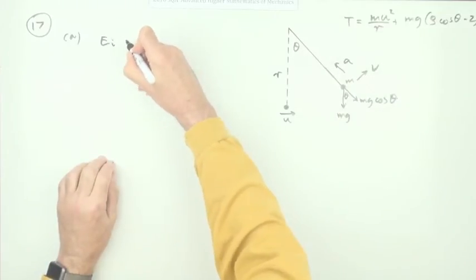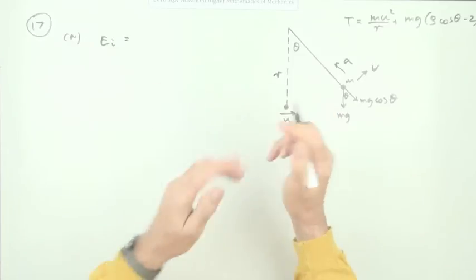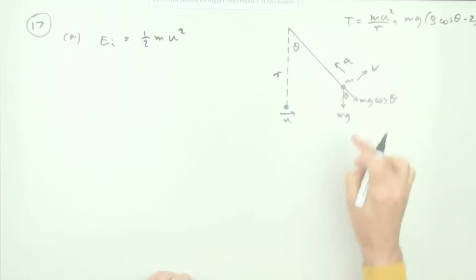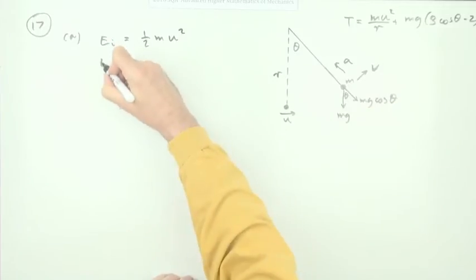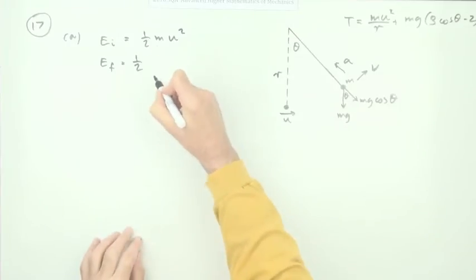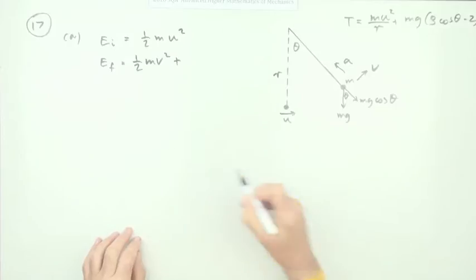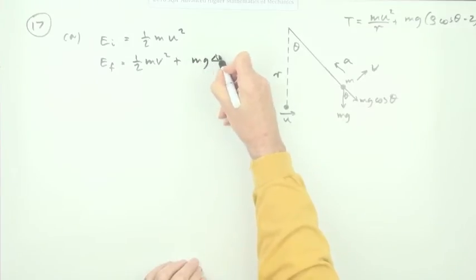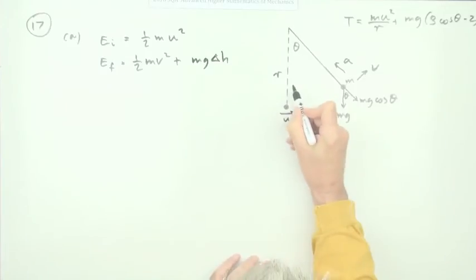Conservation of energy here. How much energy did it have to begin with? What was the initial energy? The initial energy was purely kinetic, and that's a half mu squared. What's its energy here? We'll call that the final energy for that part there. It'll be part kinetic as long as it's still moving, so that's a half mv squared, and part the gain in potential energy, which will be mg delta h.